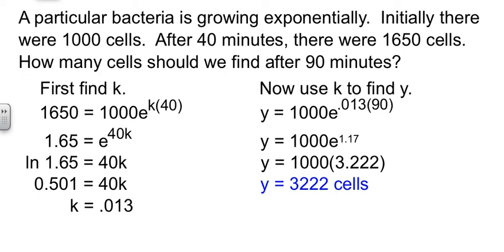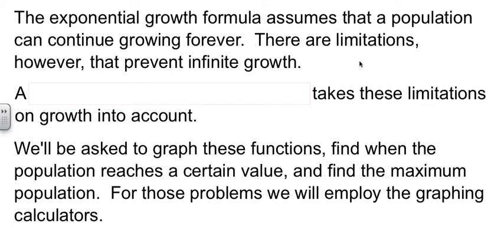So we've seen growth. We've seen decay. Now, the problem with exponential growth formulas is that it assumes that that population can continue growing forever. But there are limitations out there in the real world that will affect being able to grow forever. Things like a limited food supply, a limited amount of space. There are things that will control, that will keep the population in check. And it will eventually reach some kind of a maximum value. These kind of functions, or these kinds of situations, have a special function. It's called a logistic growth function that takes these limitations into account. So it stops it from growing forever and ever, indefinitely.